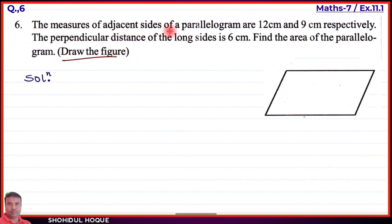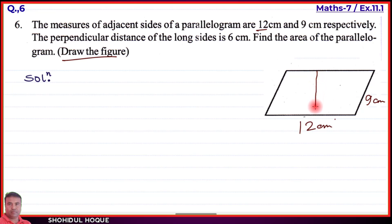Drawing the parallelogram: the adjacent sides are 12 centimeters and 9 centimeters. The perpendicular distance of the long side is 6 cm — this means the height drawn perpendicular (at 90 degrees) from the base line. This perpendicular distance is the height, which is 6 centimeters. So the figure is drawn with the given measurements.